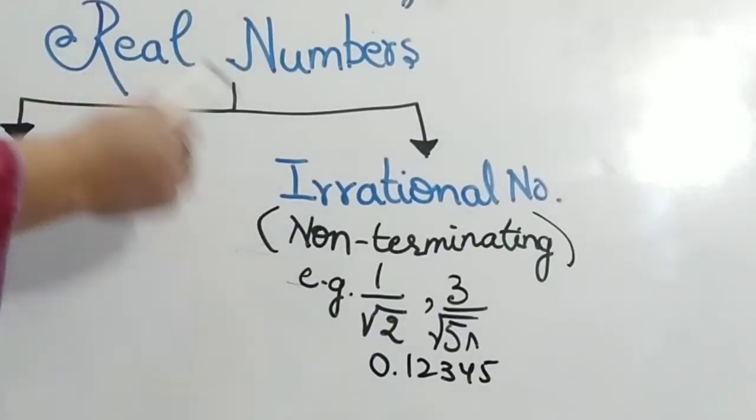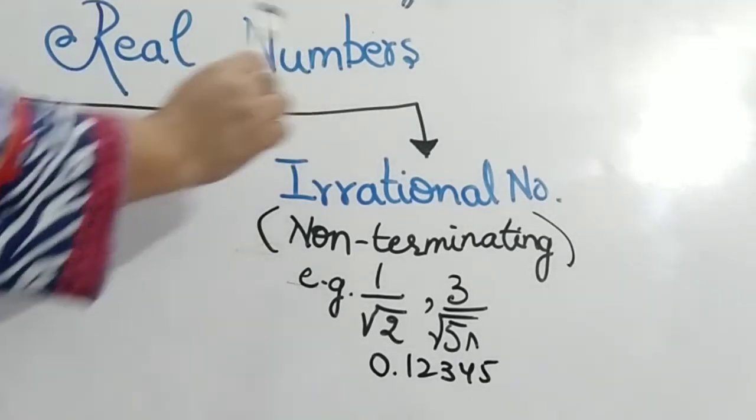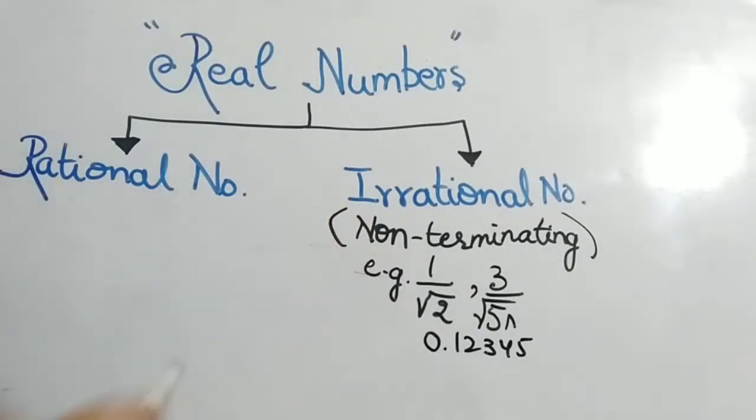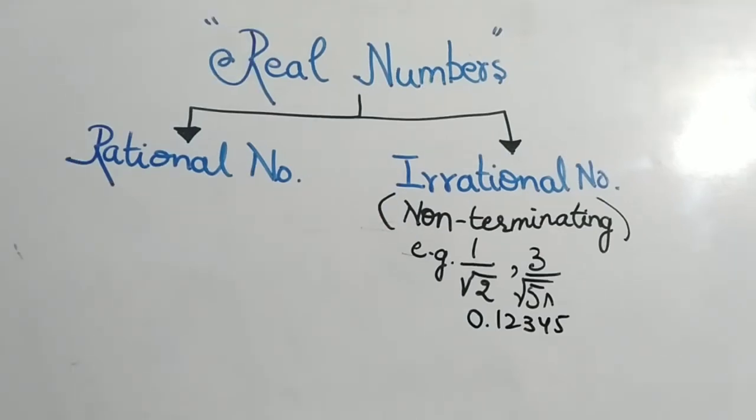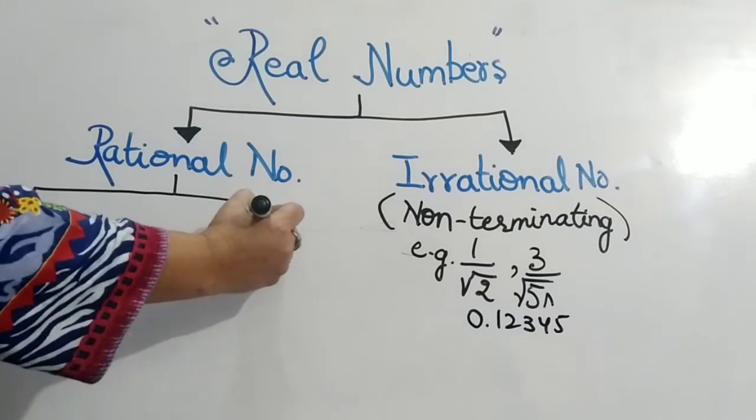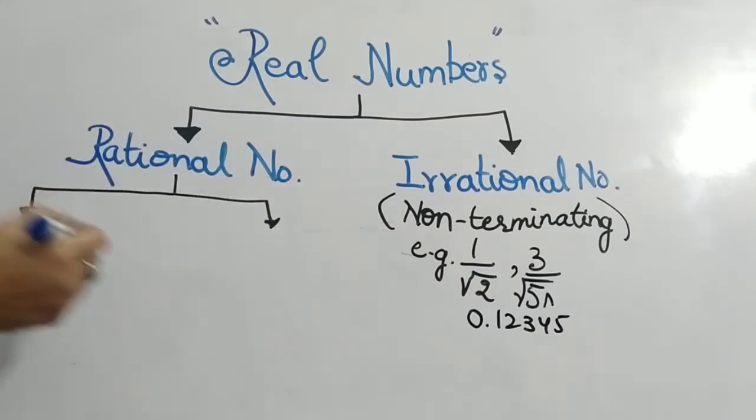These are the real numbers. Real numbers contain rational numbers and irrational numbers. Now, which are rational numbers? In rational numbers, there are two categories. We have fractions and integers.